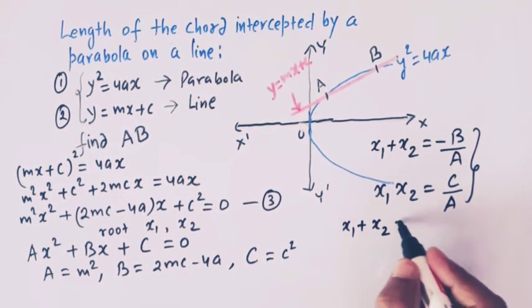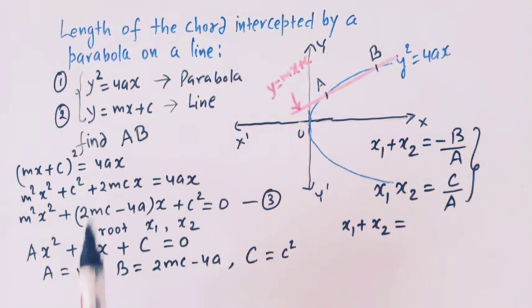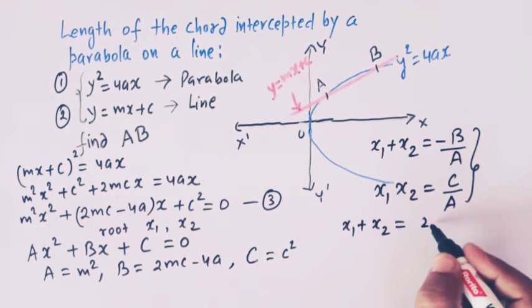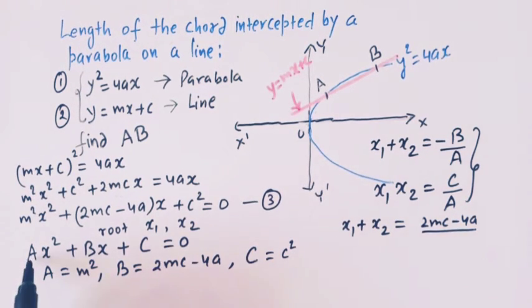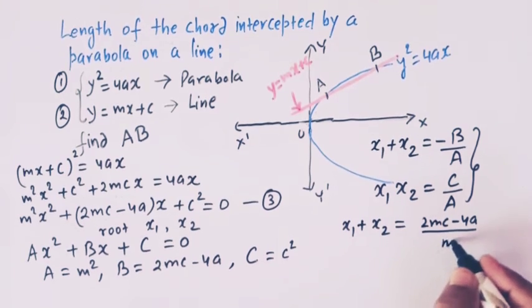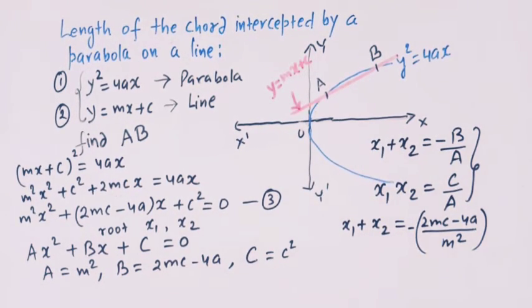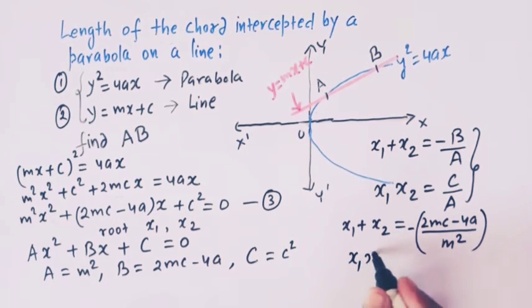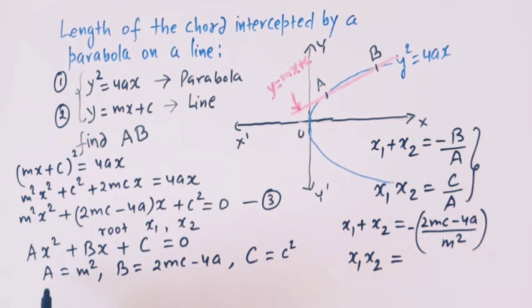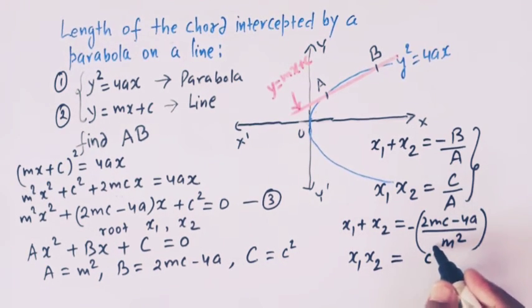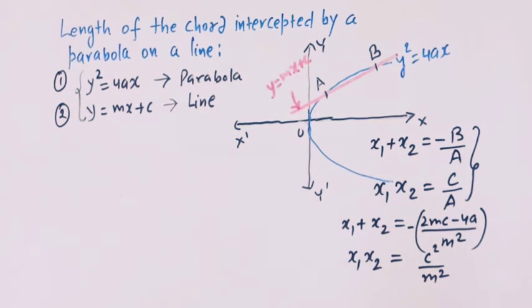So x₁ + x₂ = -b/a = -(2mc - 4a)/m². The product of the roots is given by C/a, so x₁·x₂ = c²/m². Now we have the sum and product of x₁ and x₂.